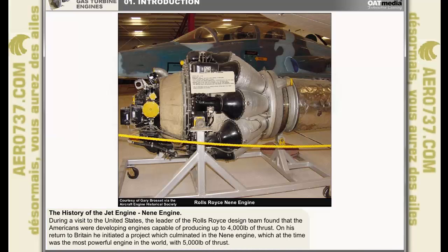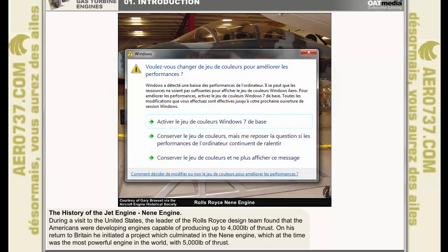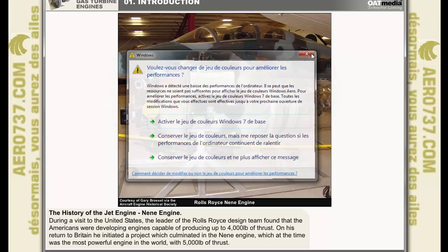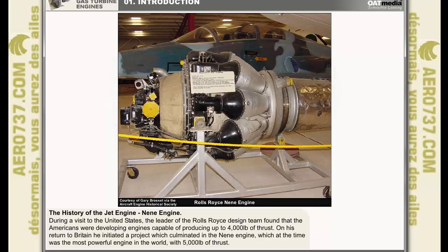During a visit to the United States in early 1944, the leader of the Rolls-Royce design team found that General Electric were developing engines capable of producing up to 4,000 pounds of thrust. As a response to this, after his return, he initiated a project which culminated in the Neen engine, which at the time was the most powerful engine in the world with 5,000 pounds of thrust.